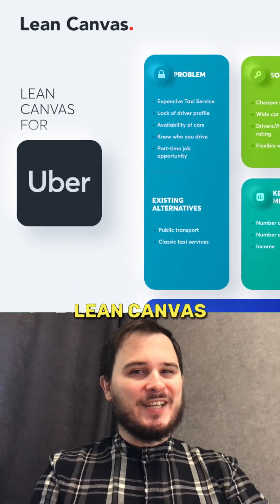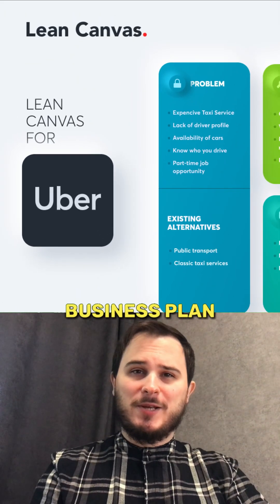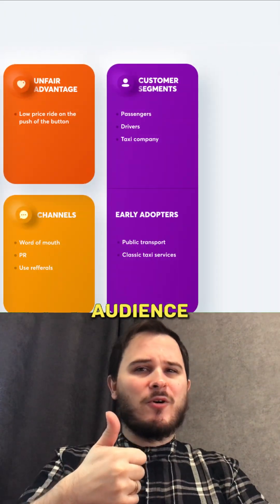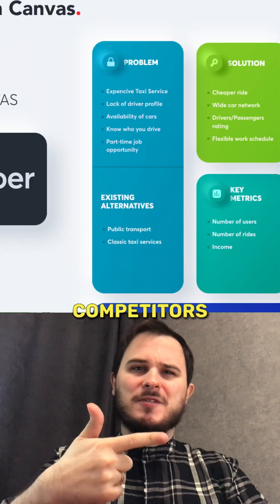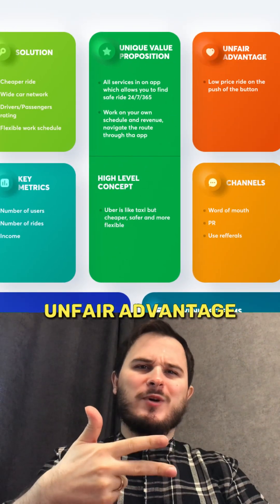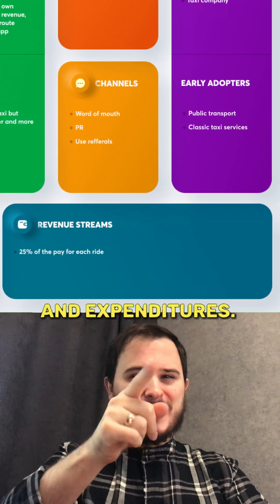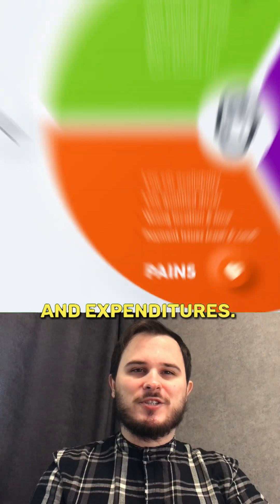How? Go with a Lean Canvas business plan. Identify your audience, competitors, unfair advantage, key metrics, revenue streams, and expenditures.